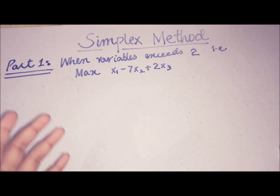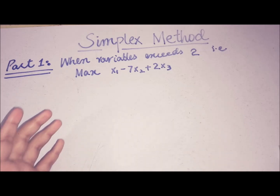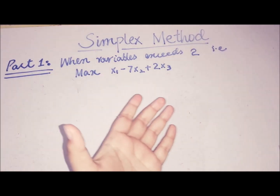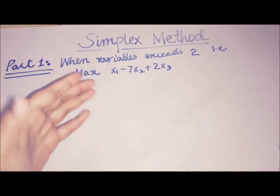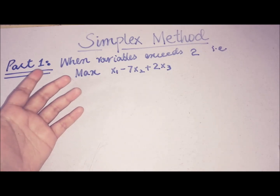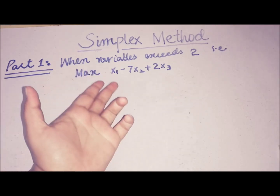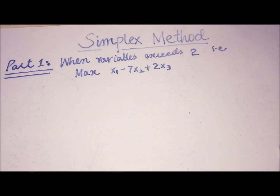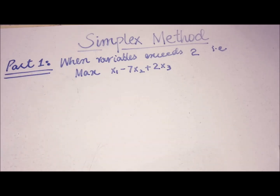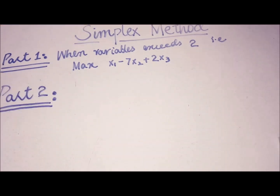We need the simplex method when we have variables that exceed two. For example, if we have to maximize the objective function x1 minus 7x2 plus 2x3, there are three variables whose values we need to figure out in order to maximize the objective function.